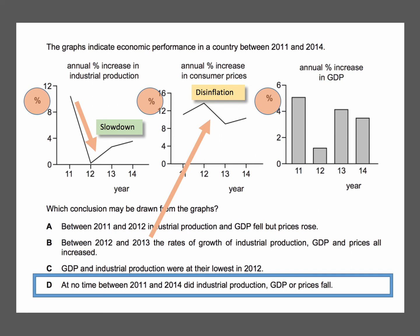Option C says GDP and industrial production were at their lowest in 2012. Taking GDP as an example across the four-year period, 2012 was the year of the slowest growth of GDP — likewise for industrial production. But both charts were showing positive percentage growth, albeit slower growth. So 2012 was the slowest growth of GDP, but the economy still grew by about 1%.